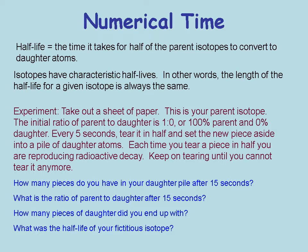Think of a half-life by taking a sheet of paper and ripping it in half. Every five seconds, rip it again and set aside the piece you ripped off — that piece represents the daughter. After 15 seconds (three rips), you have five pieces in the daughter pile and one piece still in hand. So the ratio of parent to daughter after 15 seconds is one to five. You ended up with one parent piece. The half-life of this fictitious isotope was five seconds, because every five seconds we ripped the paper.